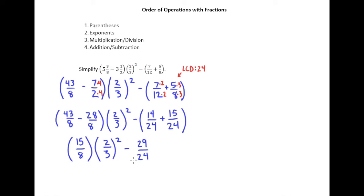Now we go to the next thing in the list, which is exponents. So I need to evaluate this exponent. So remember 2/3 squared means 2/3 times 2/3. So if I have 2/3 times 2/3, that's 2 times 2 is 4. 3 times 3 is 9. Okay, so now we've taken care of the exponent.